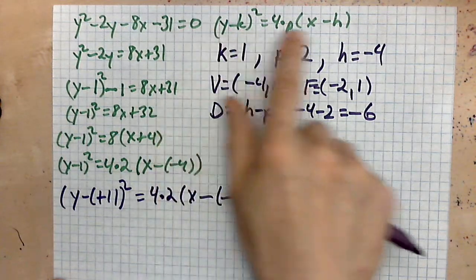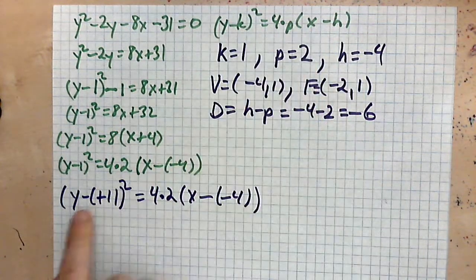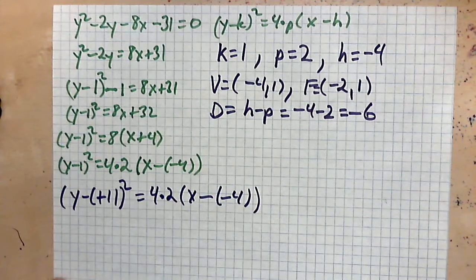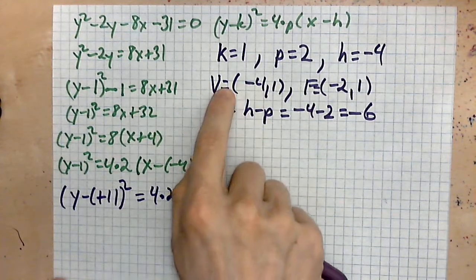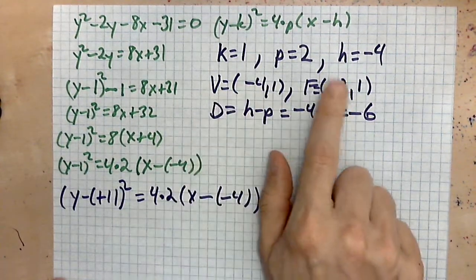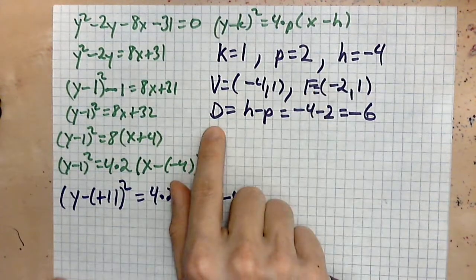it against the standard form here, and you read off the values that you need. Once you have the values read off, then you can simply plug them into V to find F, and then to find the directrix, as I've shown you here.